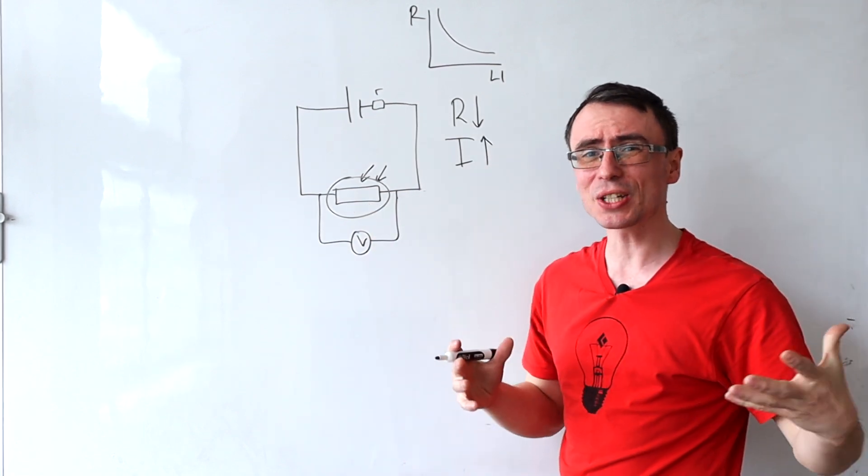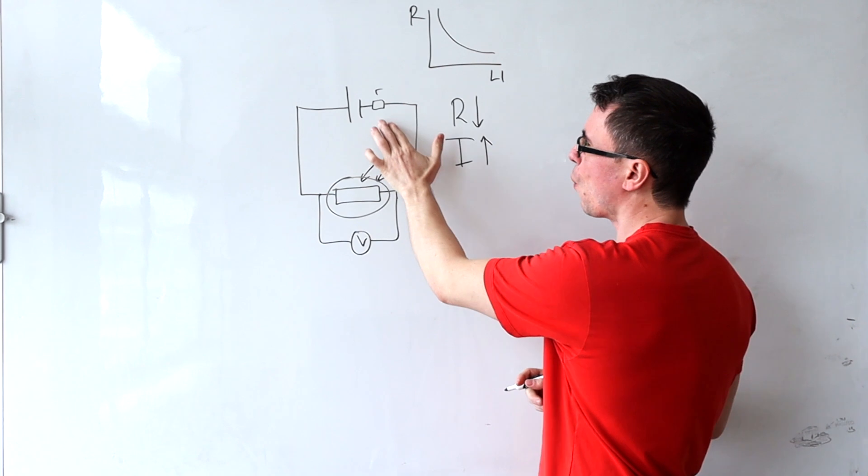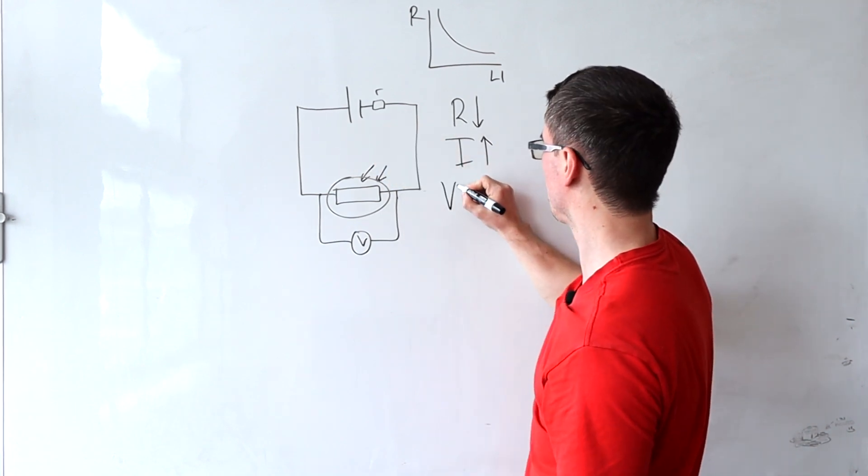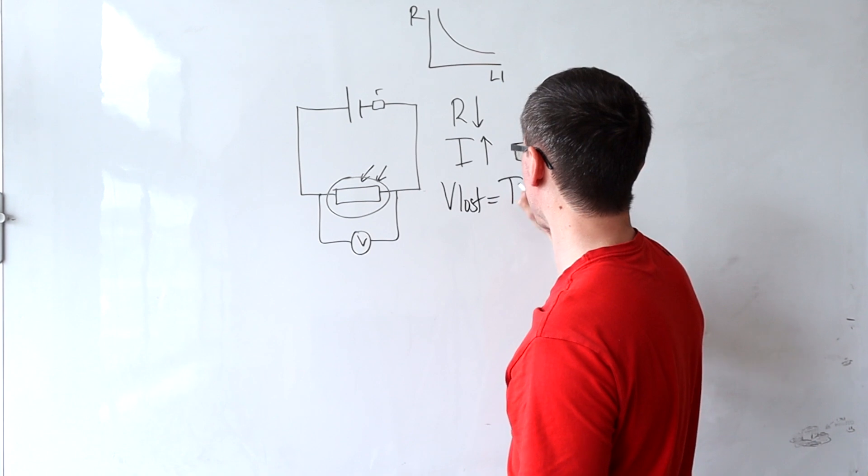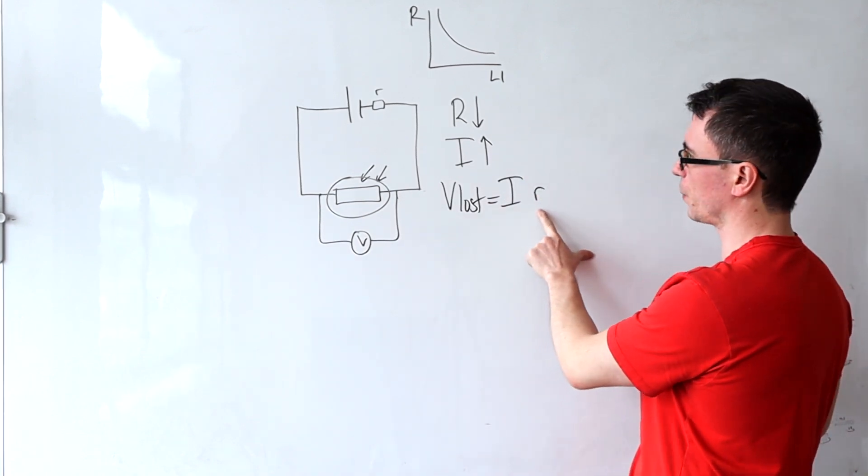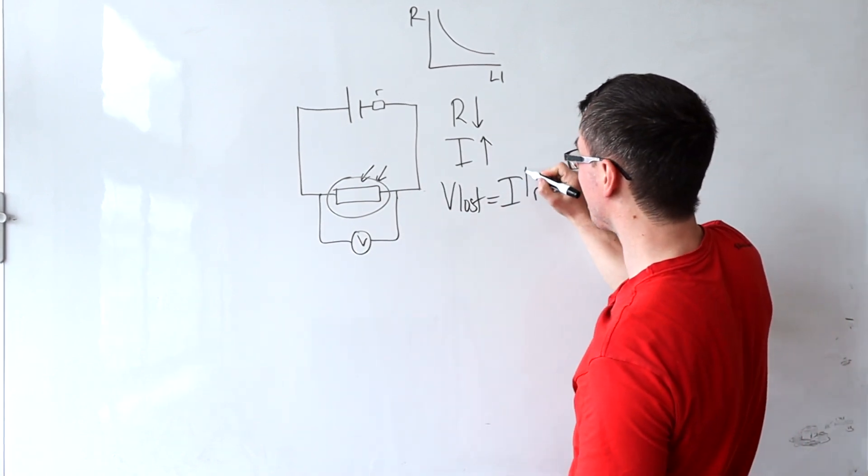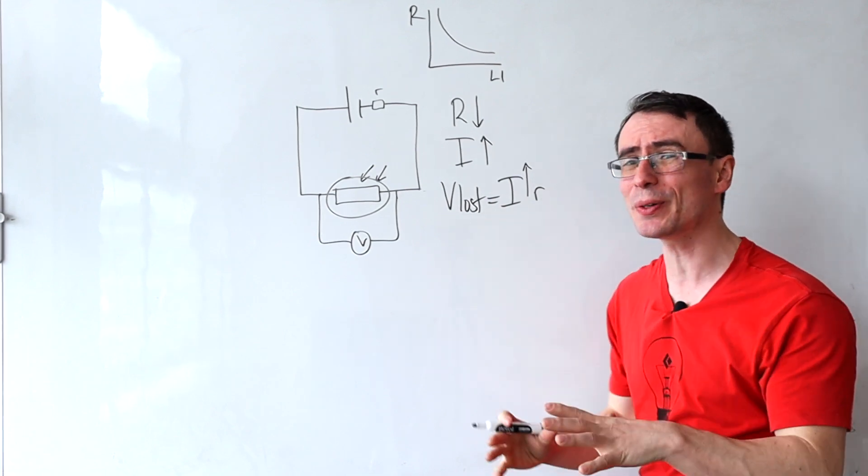We then actually get a potential divider effect. What's going to happen to the lost volts? Well, V_lost is just equal to I times the internal resistance. If the current has increased but the internal resistance...